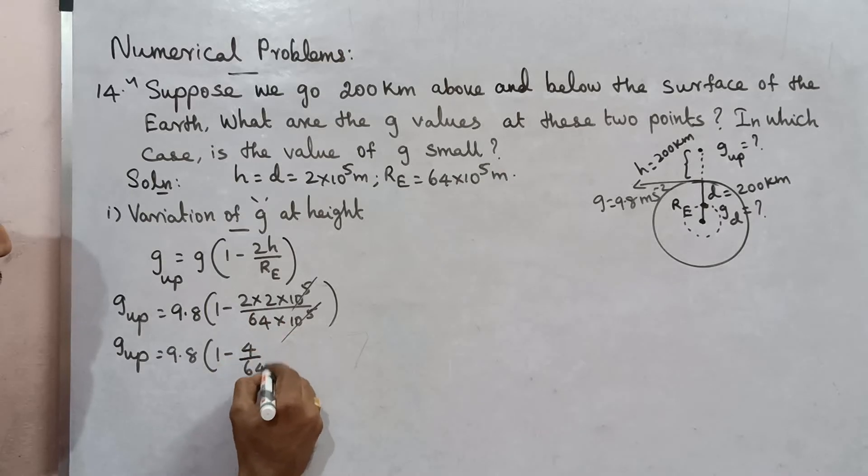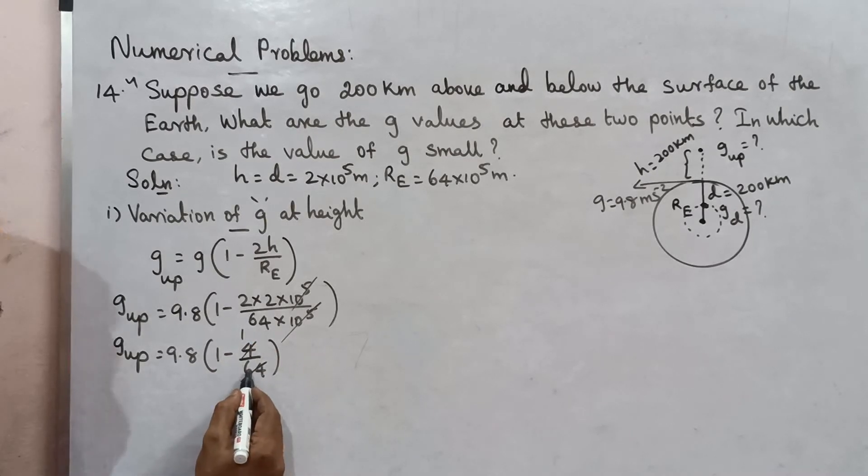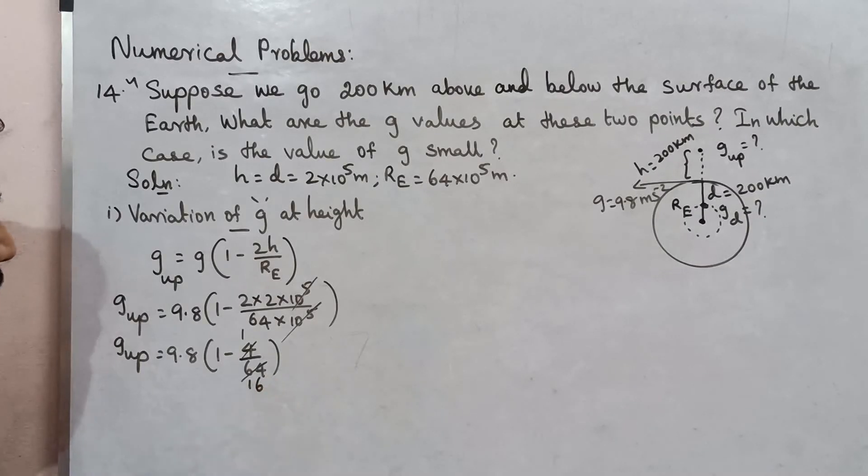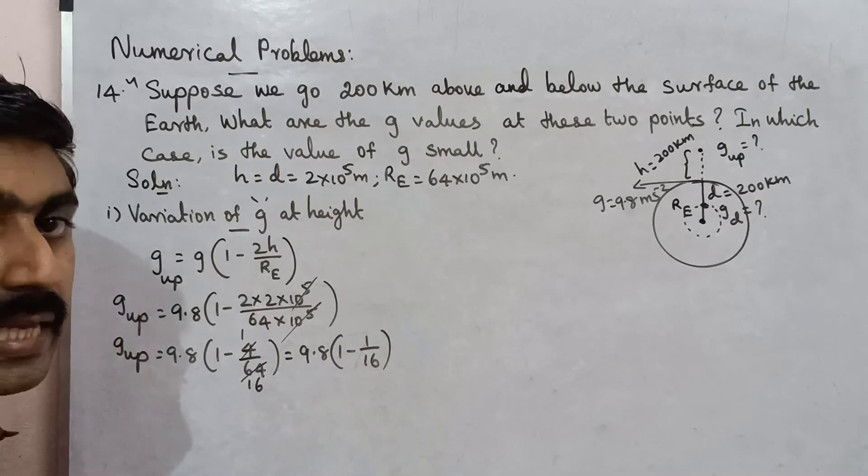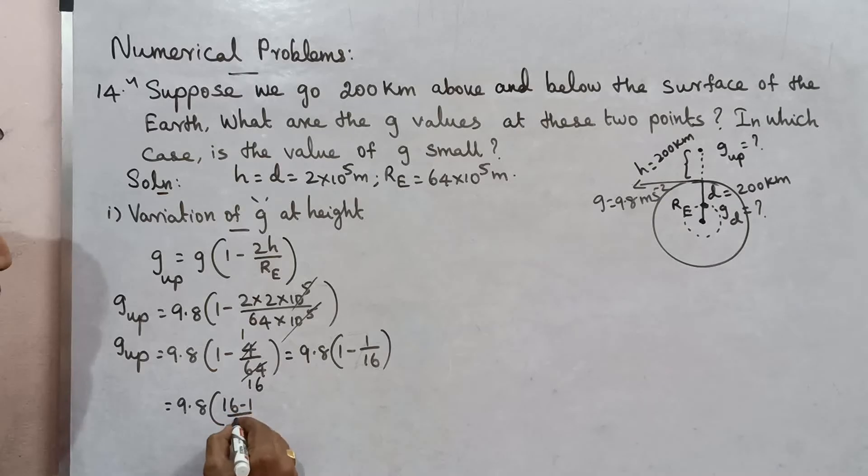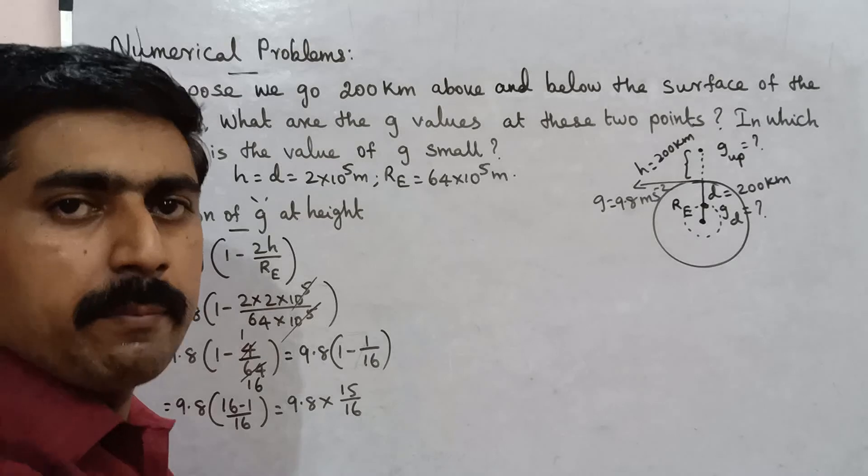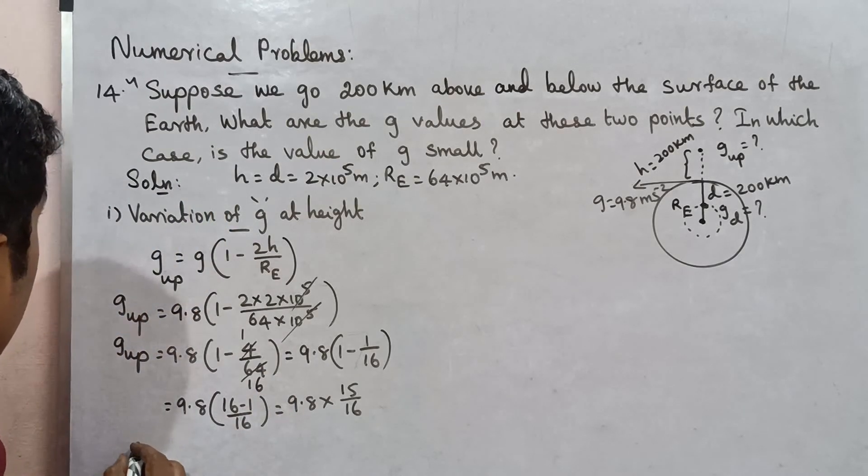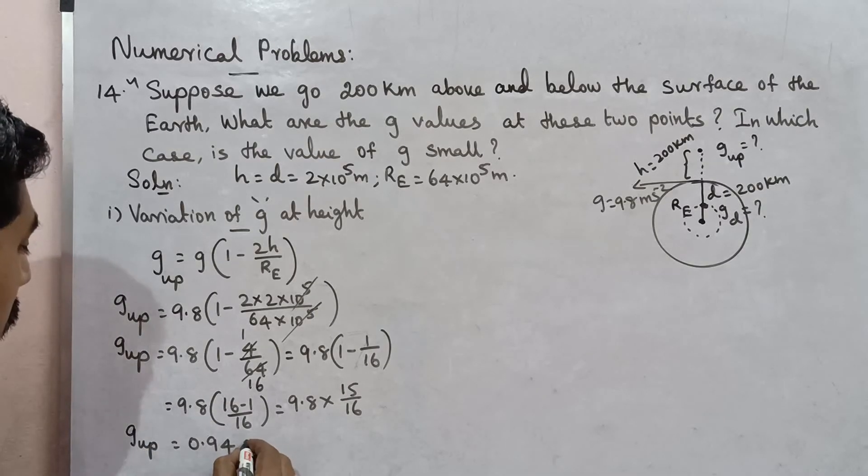So g' is equal to 9.8 into 1 minus 2 by 64. 2 goes into 64, 32 times, so 1 by 32 remaining. Which is equal to 9.8 into 1 minus 1 by 16, which is equal to 9.8 times 16 minus 1 by 16, which is 9.8 into 15 by 16, which is equal to 0.94g.